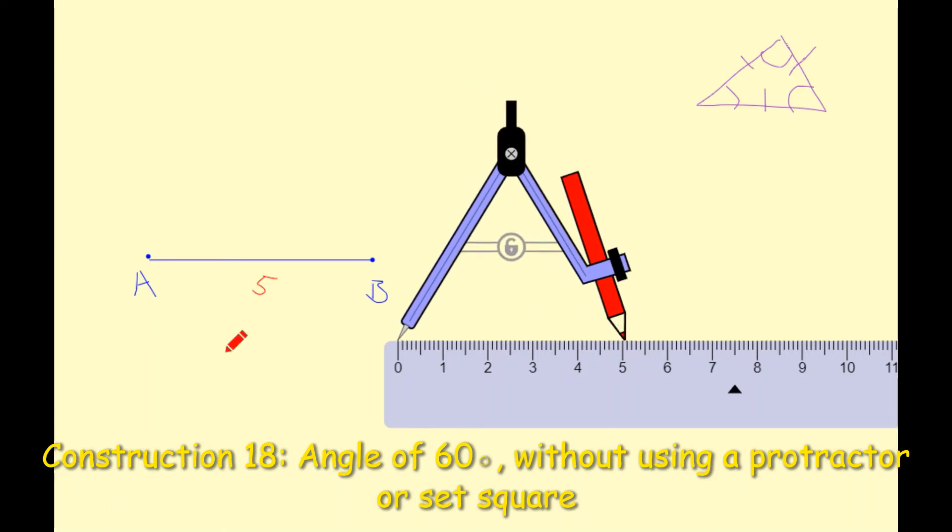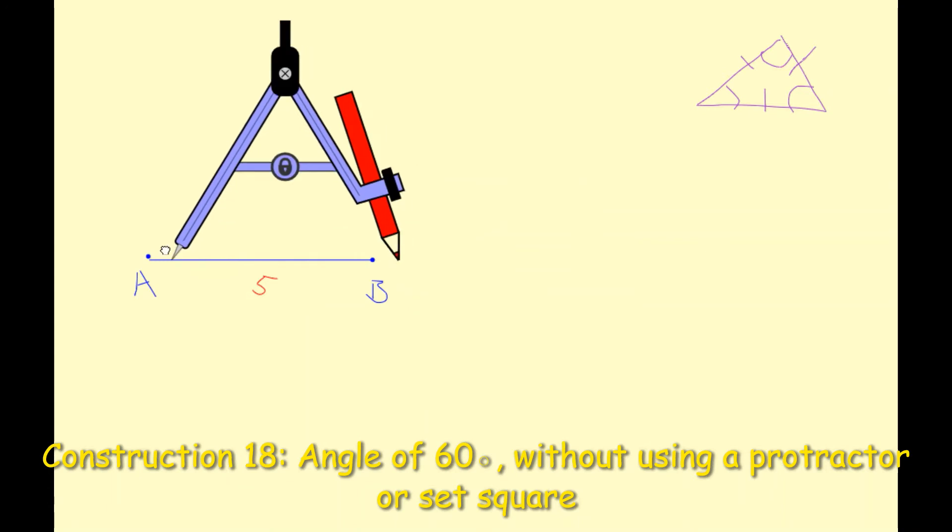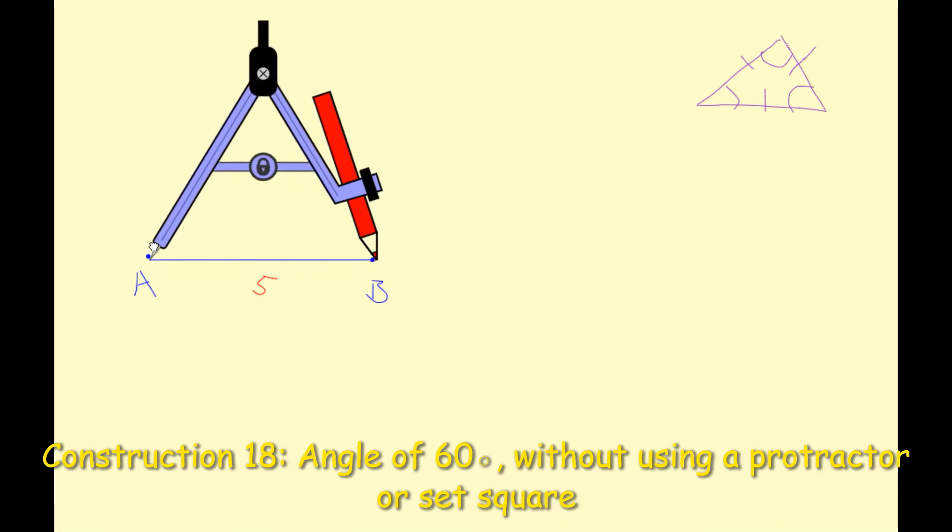So again it's going to be the same length as the line segment, and I'm going to just get rid of my ruler here and double check it. I'm just going to put my compass against my line segment and you can see here that it is five centimeters.